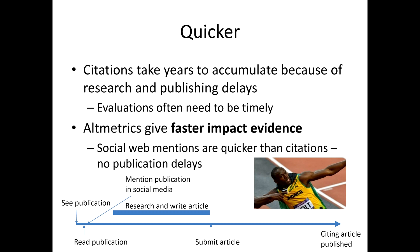Altmetrics give much faster impact evidence because they can start picking up mentions of publications much more quickly than citation databases. Someone might tweet about a publication as soon as they've read it, and they'll probably add it to their Mendeley database long before their follow-up article is complete. Social media mentions and reference manager shares all occur a long time before an article citation is picked up.